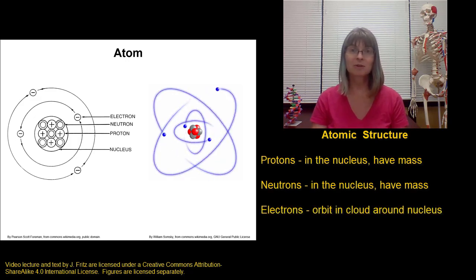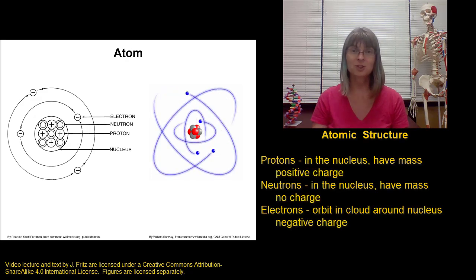Each of these types of subatomic particles has its own charge. Protons have a positive charge, electrons have a negative charge, and neutrons, as you might guess from their names, are neutral. They don't have a charge.